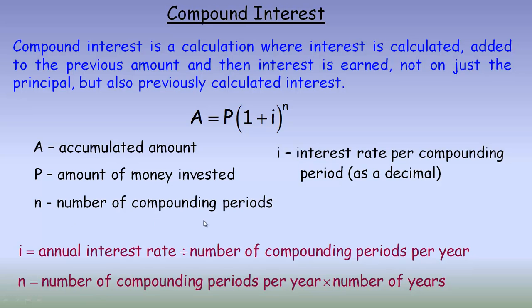The exponent n is the number of compounding periods, and you find n by multiplying the number of compounding periods per year — whether it's monthly (12 times a year), annual (once), semi-annual (twice), etc. — by the number of years to get the total number of compounding periods.